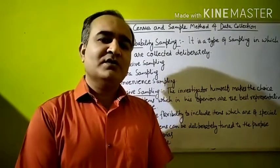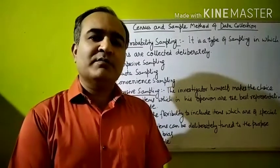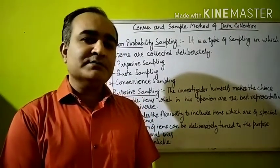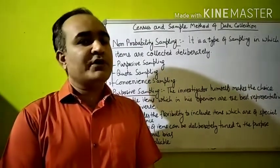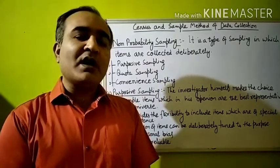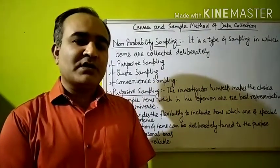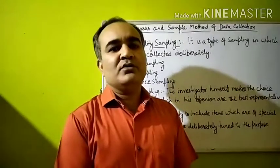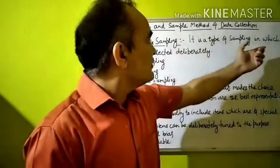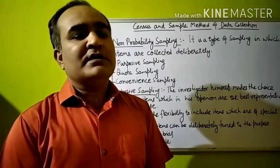Good morning students. In my previous video we studied about census and sample method of data collection, and we studied about non-probability sampling and its different kinds. In this video I will take you through the concept of non-probability sampling and its different kinds in detail. Non-probability sampling is a type of sampling in which items are collected deliberately.